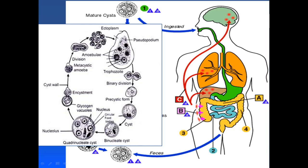After excystation, the nuclei divide into eight, and thus eight amoebae or trophozoites are formed. This typical trophozoite has ectoplasm, endoplasm, nucleus, and ingested RBCs. When it infects the large intestine and begins feeding, it causes intestinal ulcers — a classical flask-shaped ulcer. It may also cause extra-intestinal complications: it may reach the liver and cause liver abscess, or reach the lungs or brain and cause abscesses there.